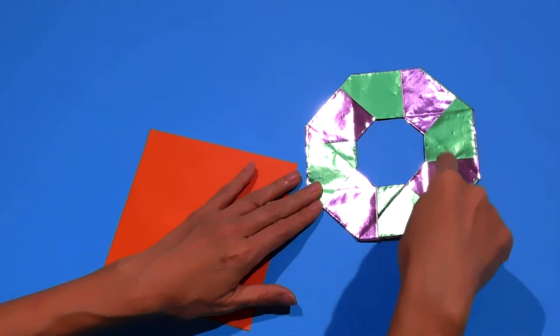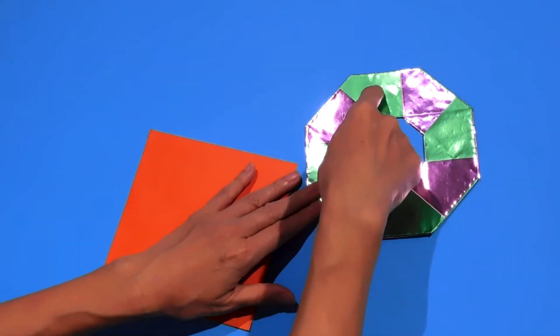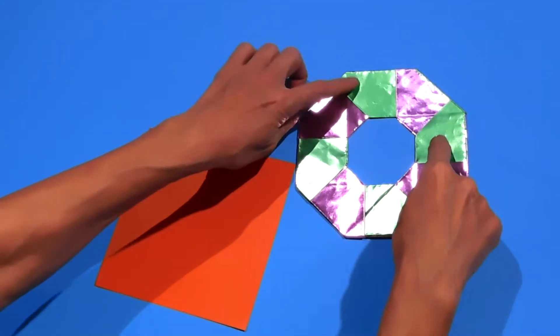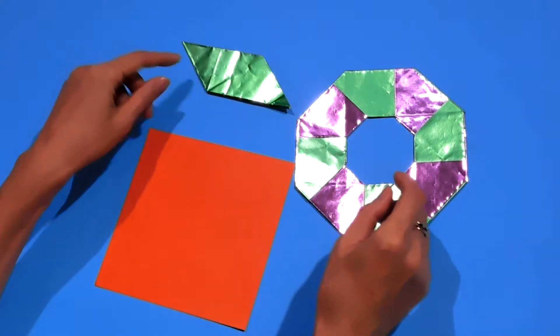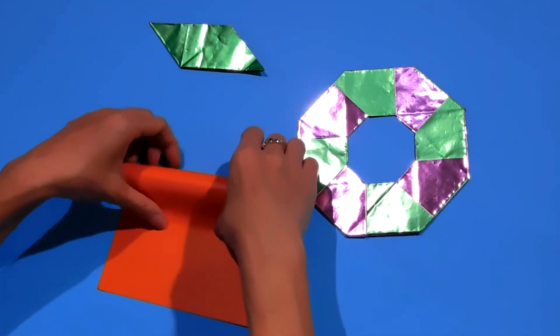This is one, two, three, four, five, six, seven, eight units. Eight units origami and one unit looks just like that. So let's try that.